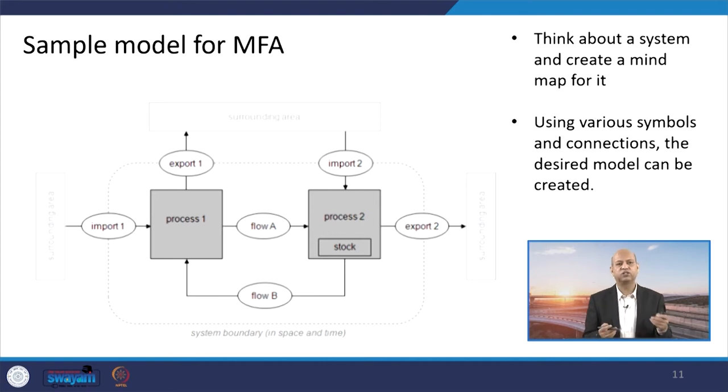This kind of flow chart or sample model you can make easily by using those shapes and icons. Like export 1, import 2, import 1, process 1, flow A, then process 2, then flow B. Interconnectivity and interaction that can be shown very easily, export 2, those kind of, and boundary system can be seen here in a nice way.